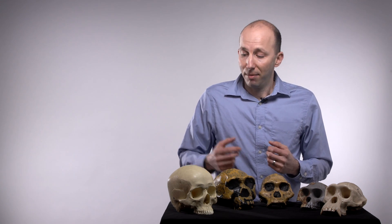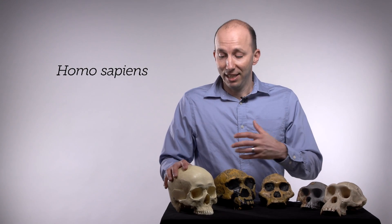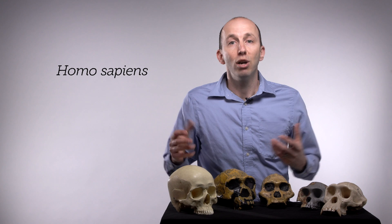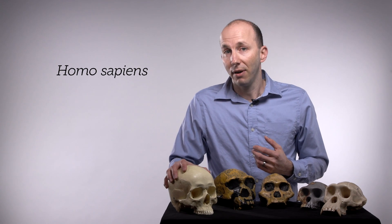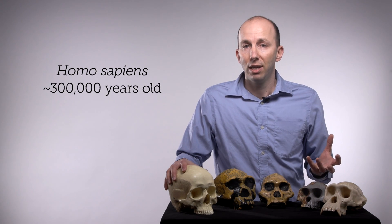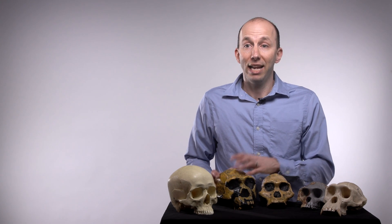And so we see species sort of bubbling up all over the globe. Our species, the genus Homo sapiens, is one of these sort of emergent Homo species. We see our earliest fossil evidence for our own species, Homo sapiens, about 300,000 years ago in Morocco. But we weren't alone. So 300,000 years ago, as we were evolving, we had Homo erectus still in Asia. We had members of the genus Homo in South Africa. We had Homo heidelbergensis in East Africa. We had Neanderthals in Europe. So there are members of the genus Homo all over the globe. We're just sort of one of the later species to evolve about 300,000 years ago.